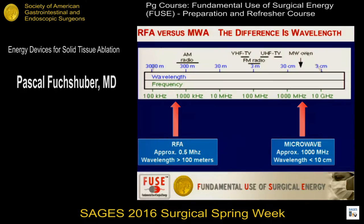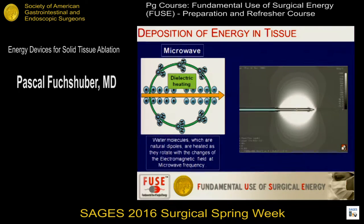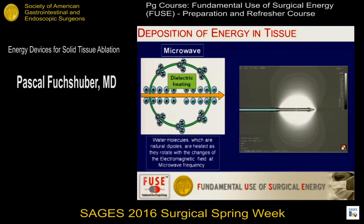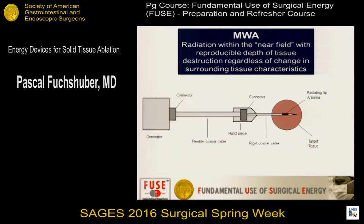In microwave, the wave is about the size of the tip of the electrode. That causes a completely different tissue effect — it's not based on ionic back-and-forth kinetic heating. Instead, it is based on water molecules, which are natural dipoles, being heated by rotation at 1,000,000 times per second. This creates the change in tissue temperature — so-called dielectric heating. This is what the spatial distribution looks like at the tip of a microwave antenna.